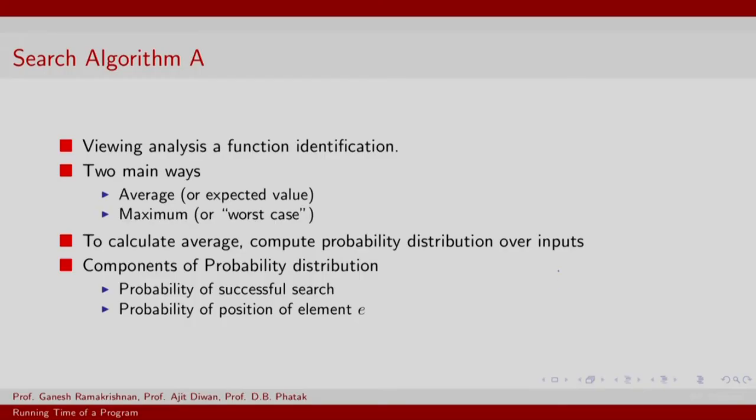Going back to our search algorithm A, you might want to recall that our search algorithm A was basically a linear scan algorithm meant to find an element E in a sequence S. We will now start looking at analysis as function identification. We look at two different notions of analysis. One is average.